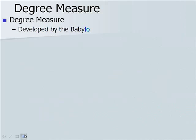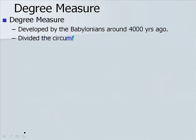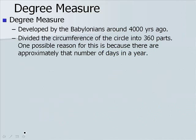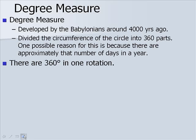Degree measure was developed by the Babylonians around 4,000 years ago. It divided the circumference of the circle into 360 parts. One possible reason for this is because there are approximately that number of days in a year. There are 360 degrees in one rotation.